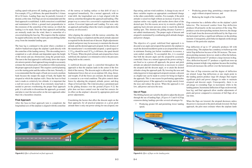After aligning the airplane with the runway centerline, the final flap setting is completed and the pitch attitude adjusted as required for the desired rate of descent. Slight adjustments in pitch and power may be necessary to maintain the descent attitude and the desired approach airspeed. In the absence of the manufacturer's recommended airspeed, a speed equal to 1.3 VSO should be used. If VSO is 60 knots, the speed should be 78 knots. When the pitch attitude and airspeed have been stabilized, the airplane is retrimmed to relieve the pressures being held on the controls.